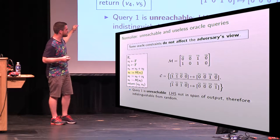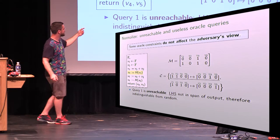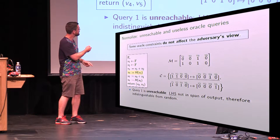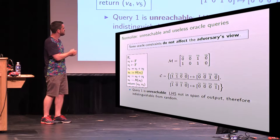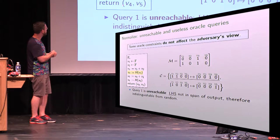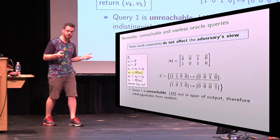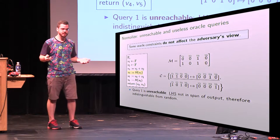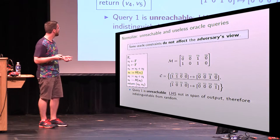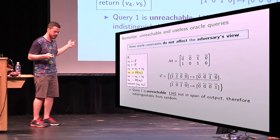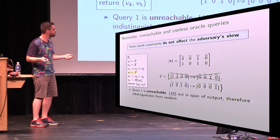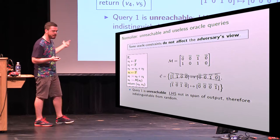This first oracle query is unreachable from the output — there's no way the adversary can reach the V2 variable, since it has zeros in that column. So there's no way to query the random oracle at that point, and this V2 variable isn't included in the output. The left-hand side of the oracle constraint is not in the span of the output of this LinnyCrypt program. Therefore this oracle query is indistinguishable from random from the distinguisher's point of view, so we can just remove it — it looks random — and this doesn't affect the output distribution at all.